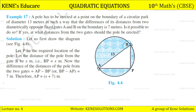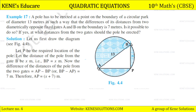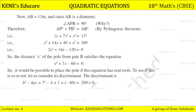The difference of the distances of the pole from the two gates: AP − BP = 7 meters. Therefore AP = x + 7. Since the triangle is inscribed in a semicircle and AB is the diameter, angle APB = 90°. So we can use the Pythagoras theorem here. AB = 13 meters, so AP² + PB² = AB².